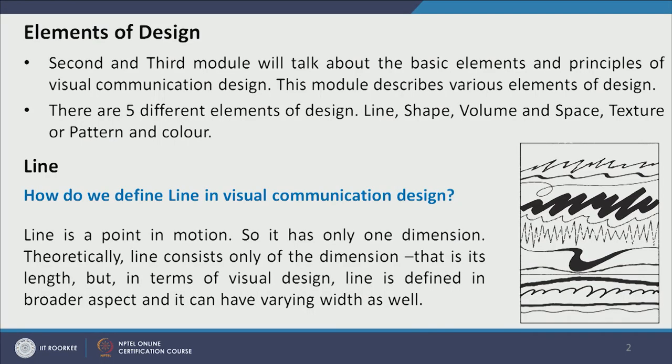The first element is line. How do we define line in visual design? Line is a point in motion. It has only one dimension theoretically. In terms of visual design, it can have different kinds of width — though in geometry some of these would be called shapes because they have some width and are not exactly one-dimensional.